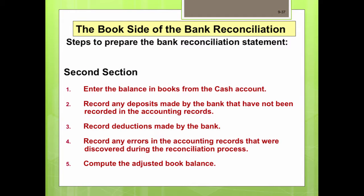To prepare the second section: enter the balance in the books from the cash account. Total and record any deposits made by the bank not yet recorded in the accounting records. Record deductions made by the bank, such as a service charge. Record any errors uncovered during reconciliation. Finally, compute the adjusted book balance. The adjusted bank balance and the adjusted book balance should be equal.